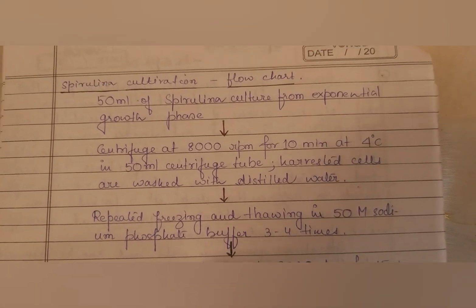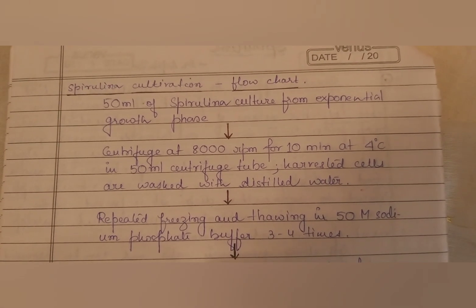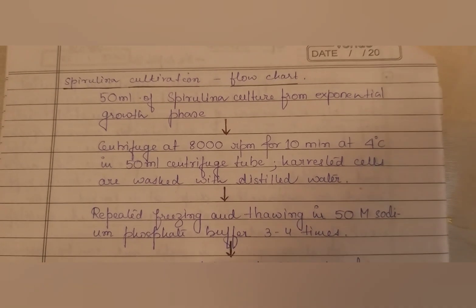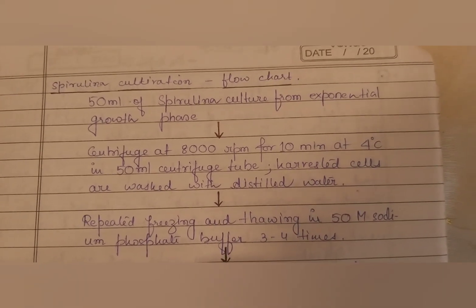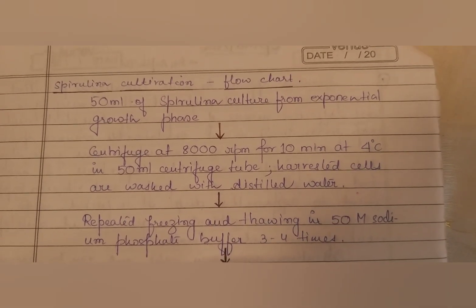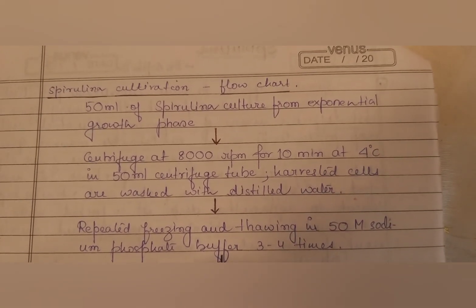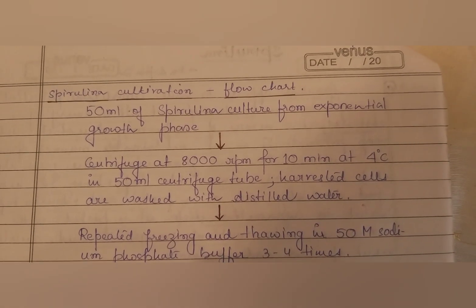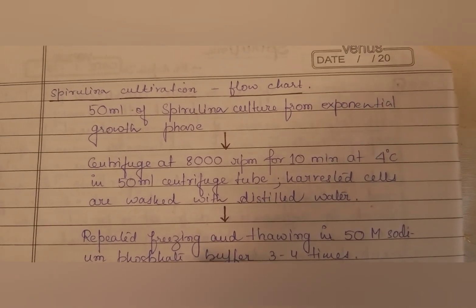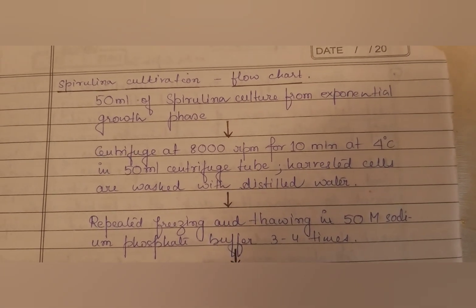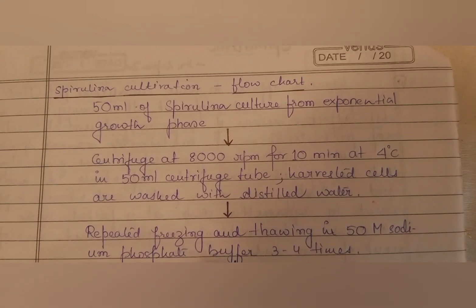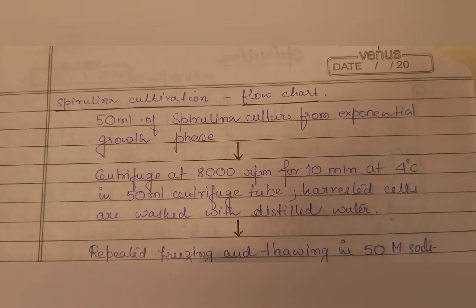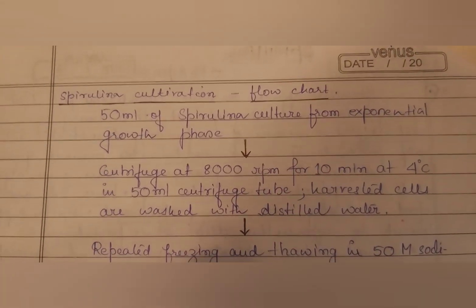The spirulina cultivation process as a flow chart: 50 ml of spirulina culture is taken from the exponential growth phase, which gives the maximum yield.